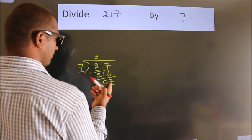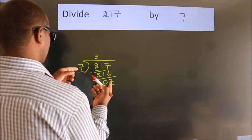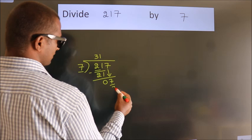So 7. When do we get 7? In the 7 table. 7 once, 7.